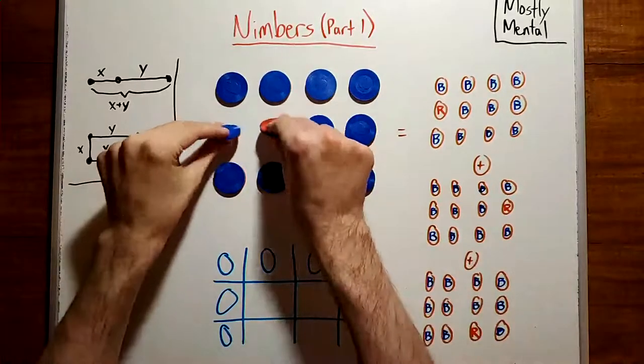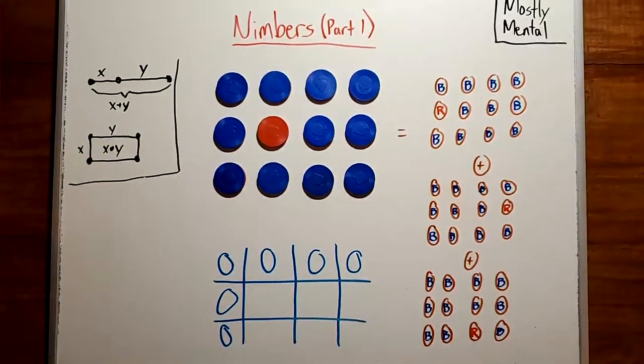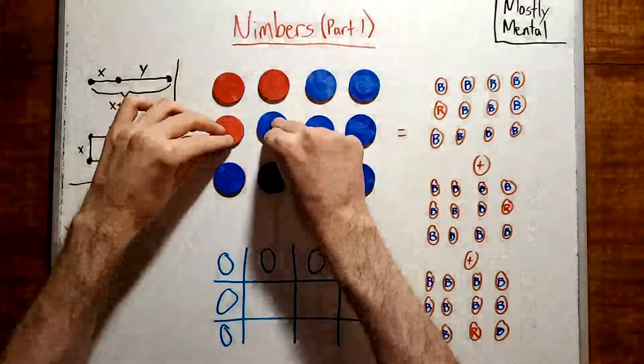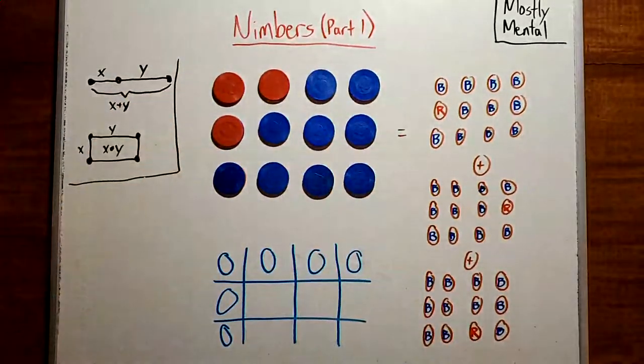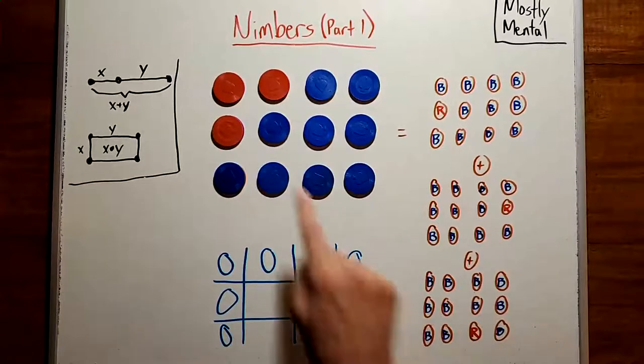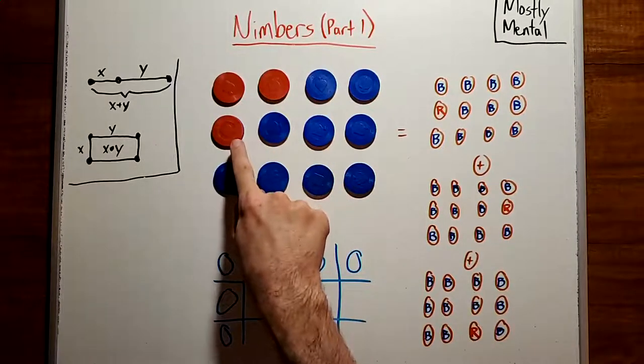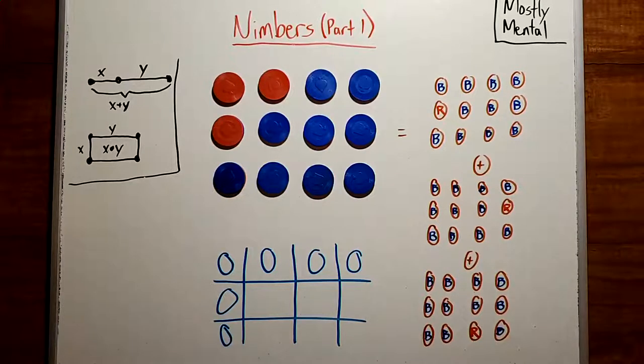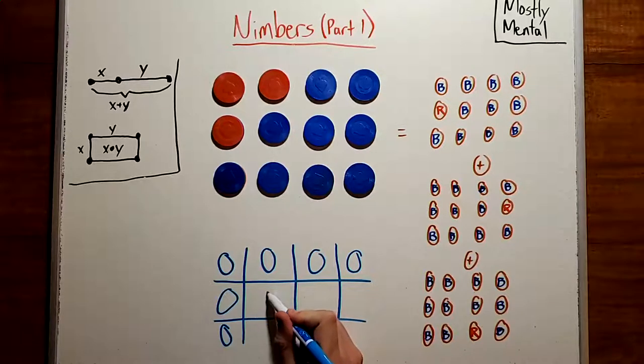Okay, what if the red coin is here? Well, then there's only one move. Flip over these four coins. And this can be written as the sum of this position, this position, and this position, which as we've seen is zero plus zero plus zero. And since the only move takes us to a zero position, this position must have value one.